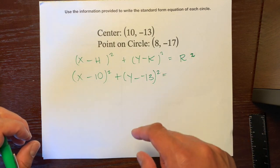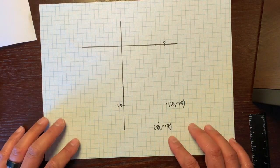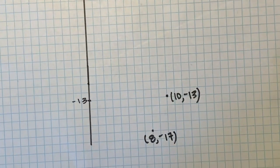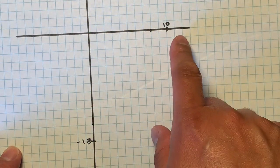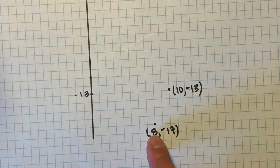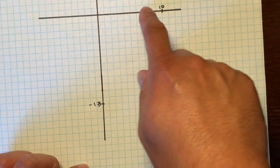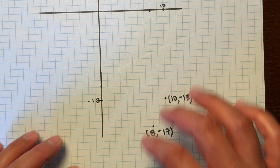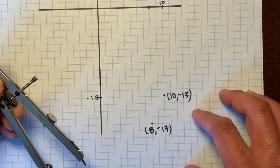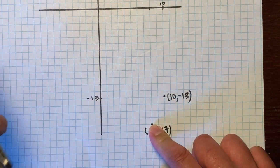To help us figure out the length of the radius, let's look at a coordinate plane. Here's the coordinate plane I drew — here is the center (10, -13). We went 10 to the right on the x-axis and down negative 13. And then the point on the circle is (8, -17) — we went right 8 and down 17. Our task is to figure out the distance from the center to that point, because that would be our radius.